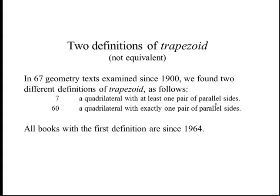There are two non-equivalent definitions of trapezoid. He studied 67 geometry texts since 1900 and found two different definitions: seven of them defined it as a quadrilateral with at least one pair of parallel sides, and 60 of the 67 defined it as a quadrilateral with exactly one pair of parallel sides. All books with the first definition are since 1964, so it seems to be moving toward a more inclusive hierarchy as time goes on.